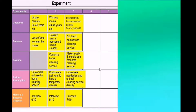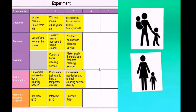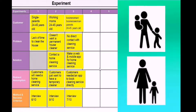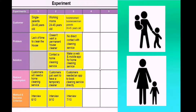In the experiment section, the first customer is single parents, ages 24 to 45 years old. The problem is lack of time to clean the house. The riskiest assumption is that customers will need a home cleaning service. Our method is an interview and the success criterion is 6 out of 10.